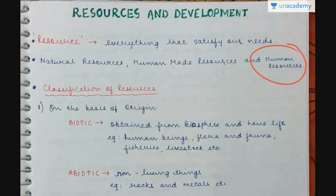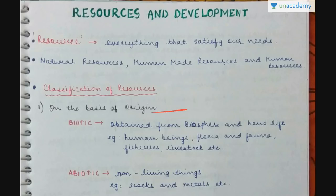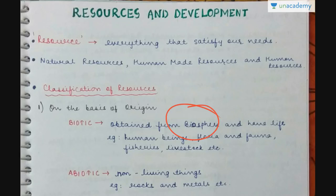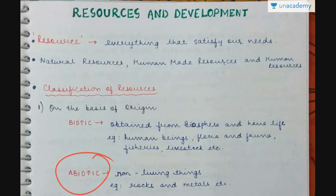Now, how do we classify resources? There will be different kinds of classification — some will have less, some will have more in different reference books. Since I am covering the summary of Class 10 NCERT, whatever is given in that particular textbook is what I am doing. The first classification is on the basis of origin: biotic or abiotic. Biotic resources have life and are obtained from the biosphere — like human beings, flora, fauna, fisheries, livestock, etc. Abiotic resources are non-living things like rocks, metals, minerals, etc.